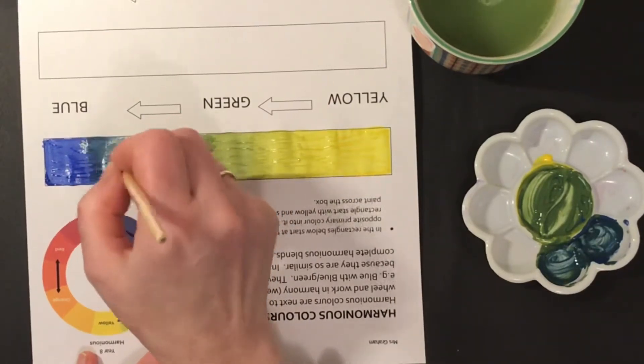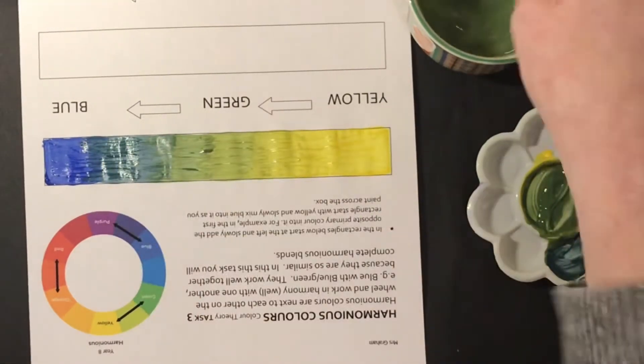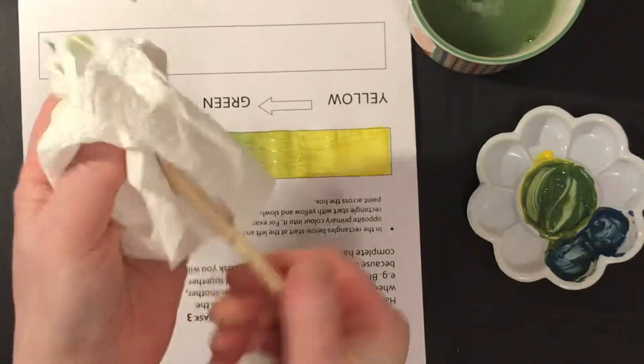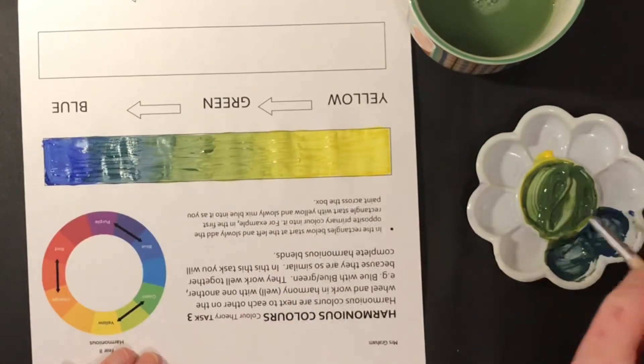And that's the first strip done. At this point you really want to wash your tray and clean out your water so that you're ready for the next set of colors.